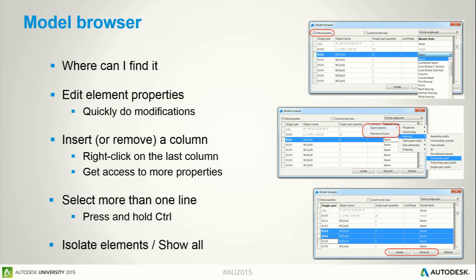Now I would like to mention the model browser. The model browser is a nice way to get direct access to object properties. In this dialog box you can add or remove columns, and you can edit properties — so it's an easy way to modify properties without having to go to each element individually.